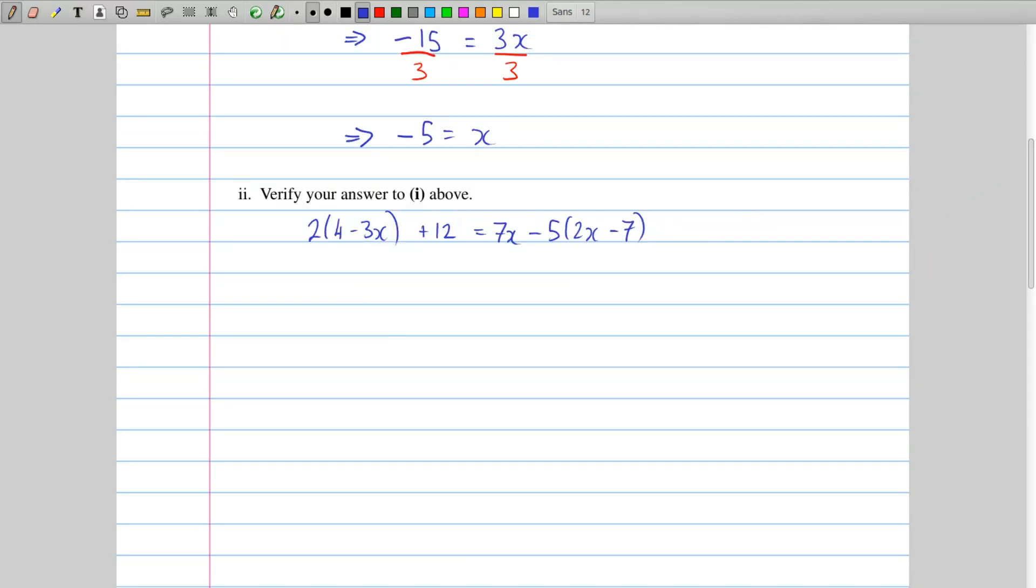Part 2 asks us to verify our answer to part 1 above. And what that means is we take our answer from part 1, where we worked out x is minus 5. We put that into the original equation and we see if things work out. So let's say we work out the left-hand side. That was 2 by 4 minus 3x plus 12, and that's going to turn into 2 by 4 minus 3. Instead of x, I now have minus 5, because that's what I worked it out to be in the previous part.